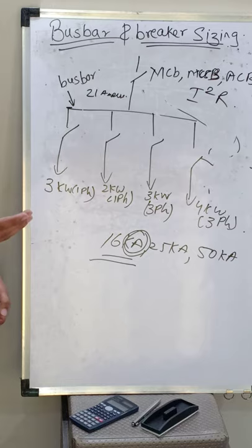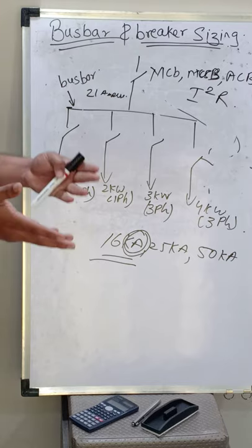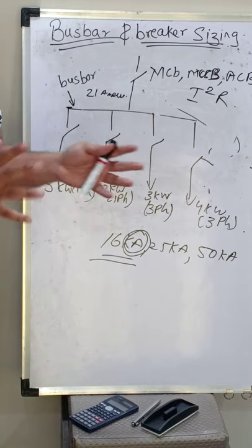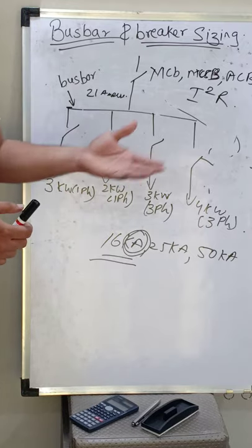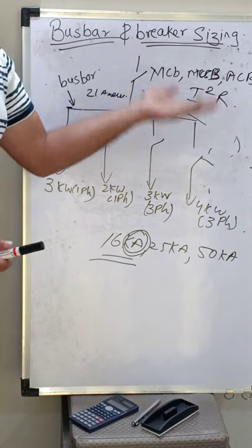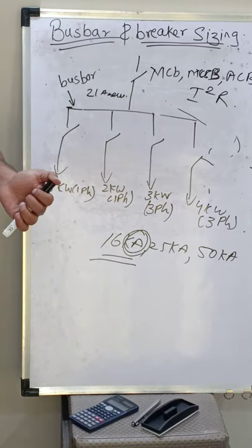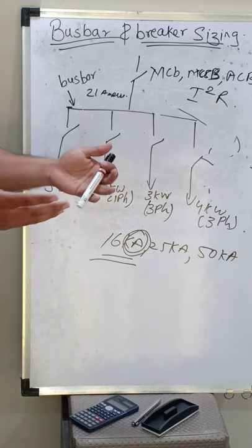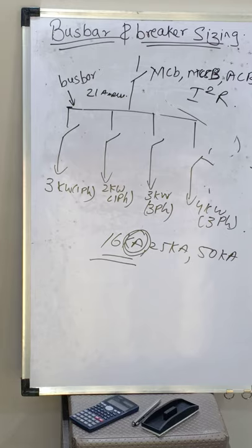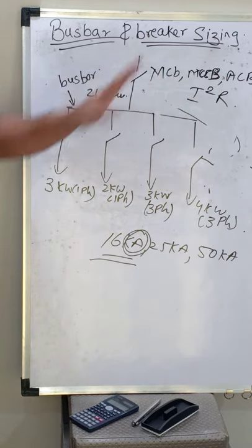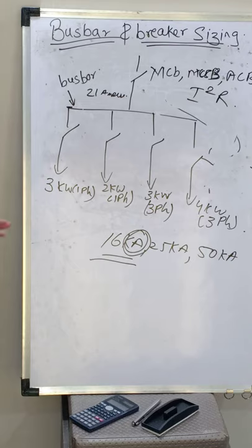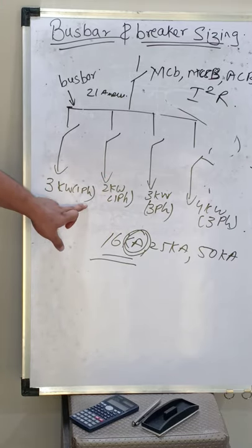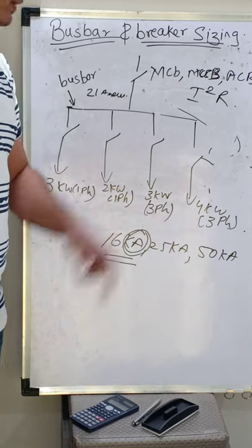On the LT side we generally use MCB, MCCB, and ACB. As per my practice: up to 63 ampere we go for MCB; above 63 ampere we go for MCCB; above 630 ampere we go for ACB. Some manufacturers make MCCB up to 1000 ampere, and you can use those if they have efficient arc extinguishing properties. Now let's start panel designing. The loads connected are 3 kW single phase, 2 kW single phase, 3 kW three phase, and 4 kW three phase — total 12 kilowatt.